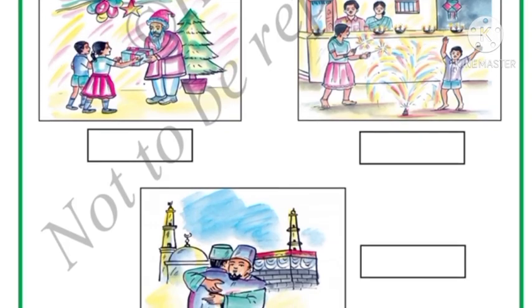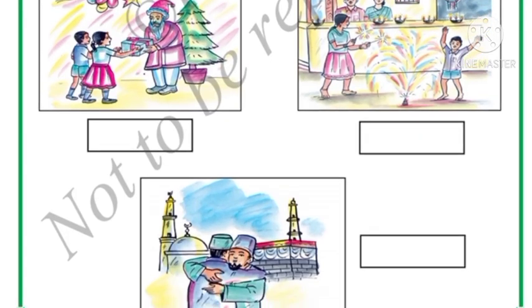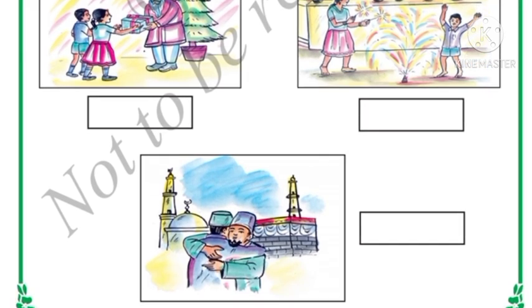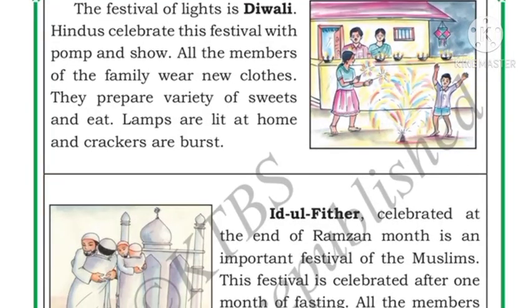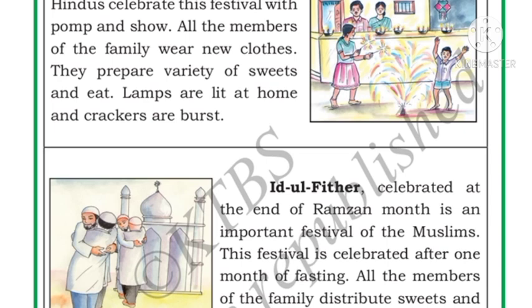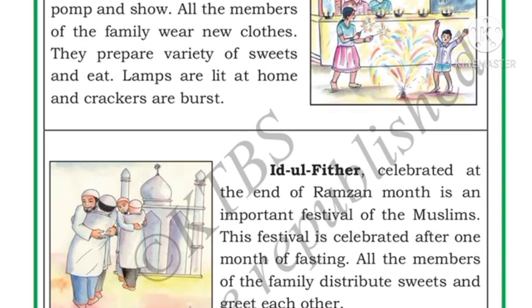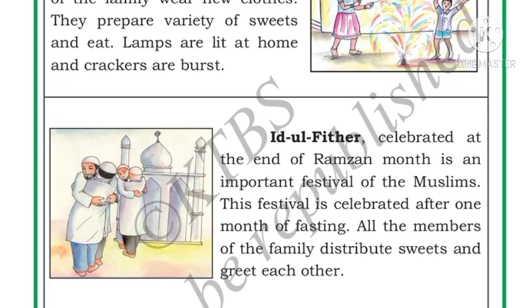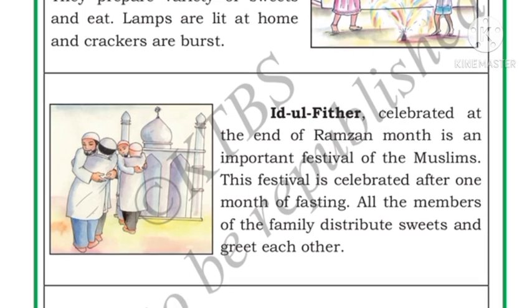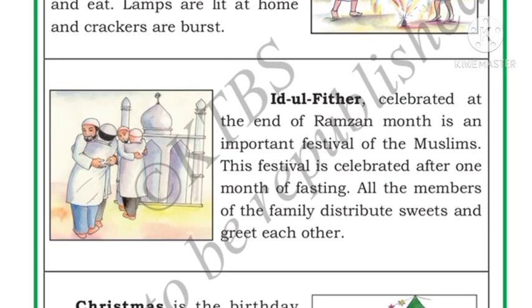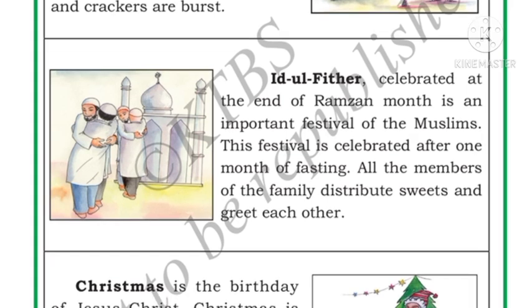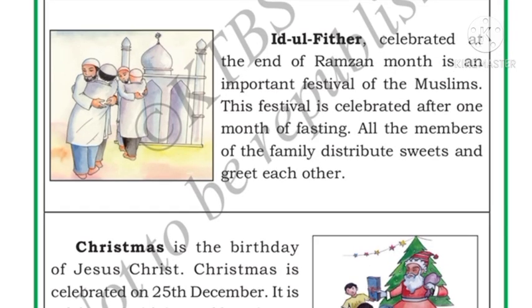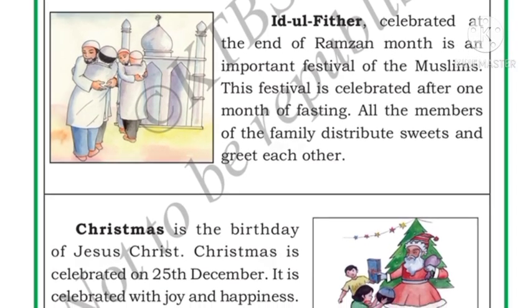Next, this one is Eid-ul-Fitr — you can see two men greeting each other. Eid-ul-Fitr is celebrated by Muslims. The festival of lights, Diwali, is celebrated by Hindus with pomp and show. All family members wear new clothes, prepare a variety of sweets, light lamps at home, and burst crackers. Eid-ul-Fitr, celebrated at the end of the Ramzan month, is an important festival of Muslims. It is celebrated after one month of fasting, and all family members distribute sweets and greet each other.